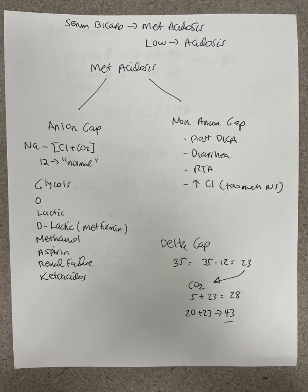There are two types of metabolic acidosis — nothing to do with pH or compensation. You have an anion gap metabolic acidosis or a non-anion gap metabolic acidosis. If you have a low bicarbonate, you then look: is there an anion gap or no anion gap?